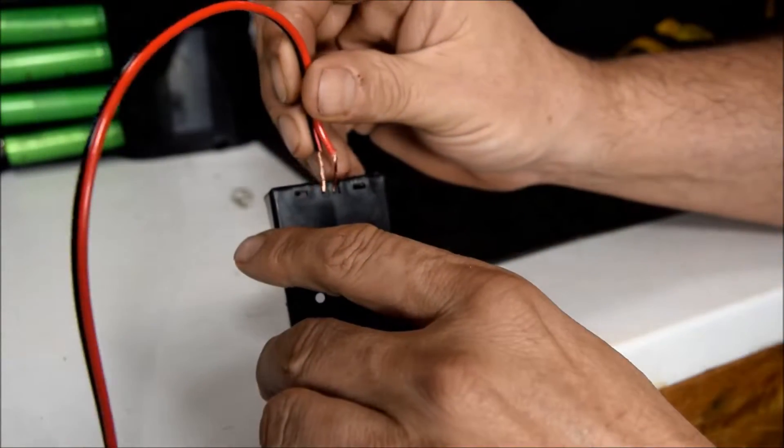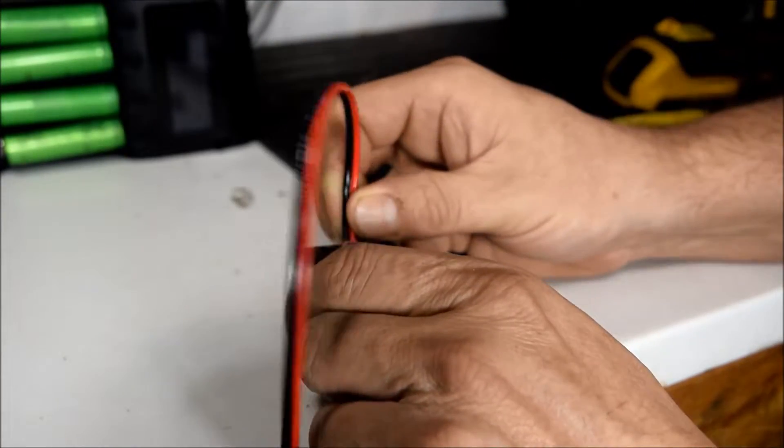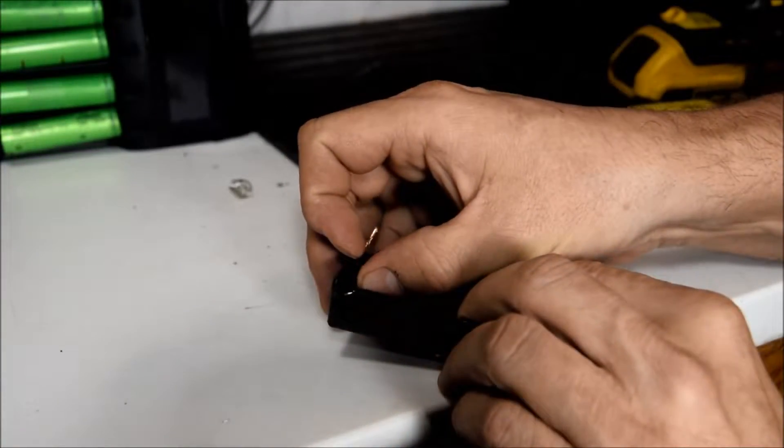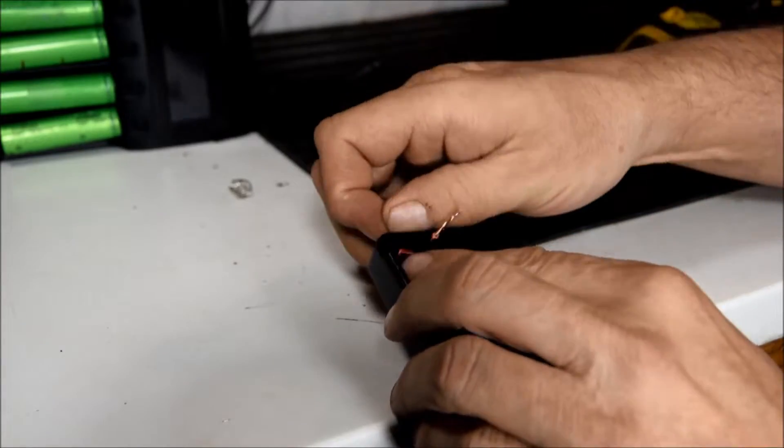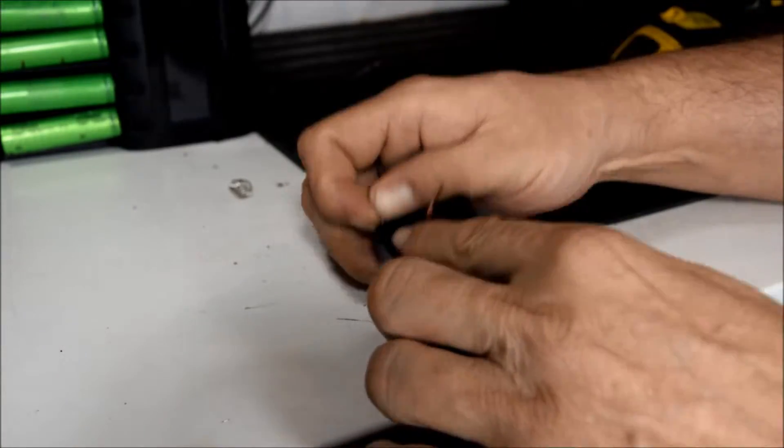Verifying that your polarity is correct, push the wires through the holes in the bottom of the holder. Now push the copper portion of the wire through the holes you drilled in the holder earlier. When you're done it will look like this.